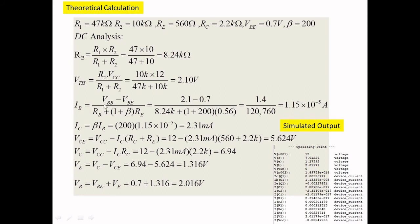The DC analysis calculates Rth, Vth, IB, IC, VCE, VC, VE, and VB. The base resistance is R1 × R2 / (R1 + R2) from the Thevenin equivalent. IB = (VB − VBE) / (RB + (1 + β)RE), IC = β × IB. The calculated IB is 1.15 × 10⁻⁵, and the simulated value is 1.13 × 10⁻⁵ — almost the same.